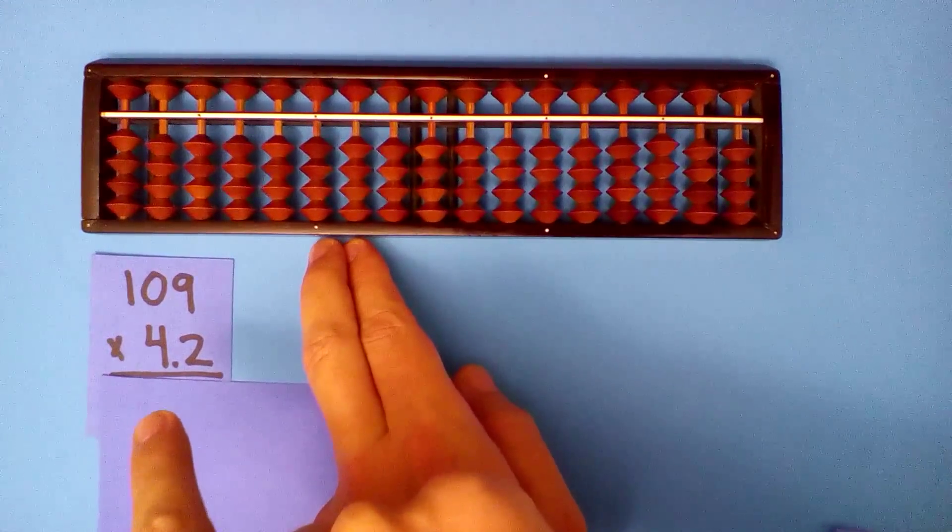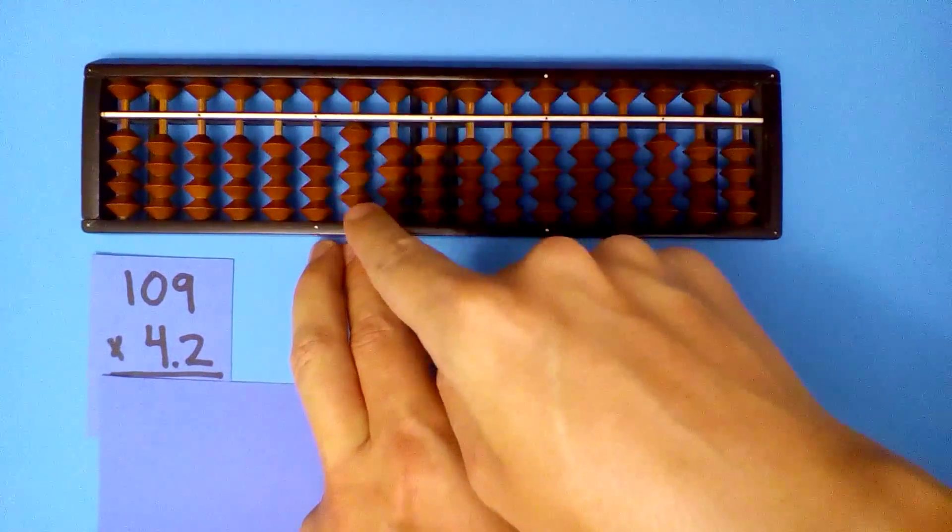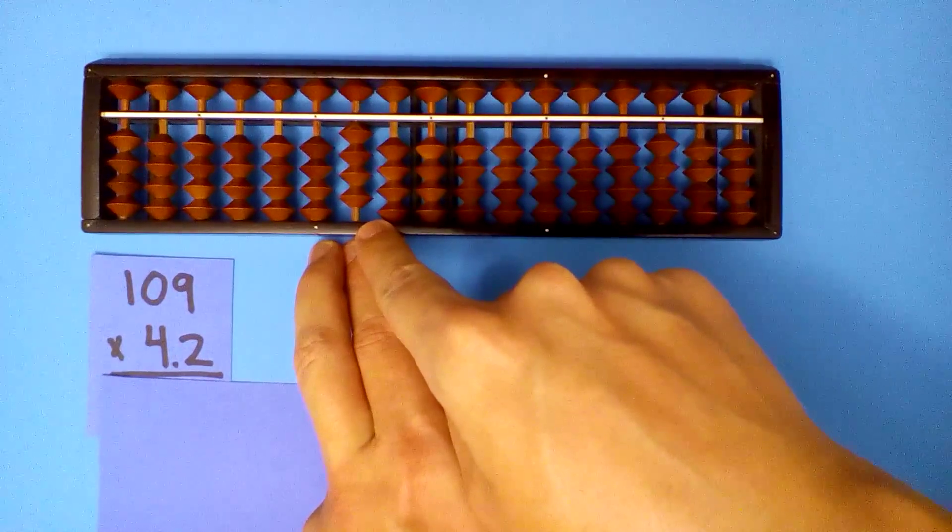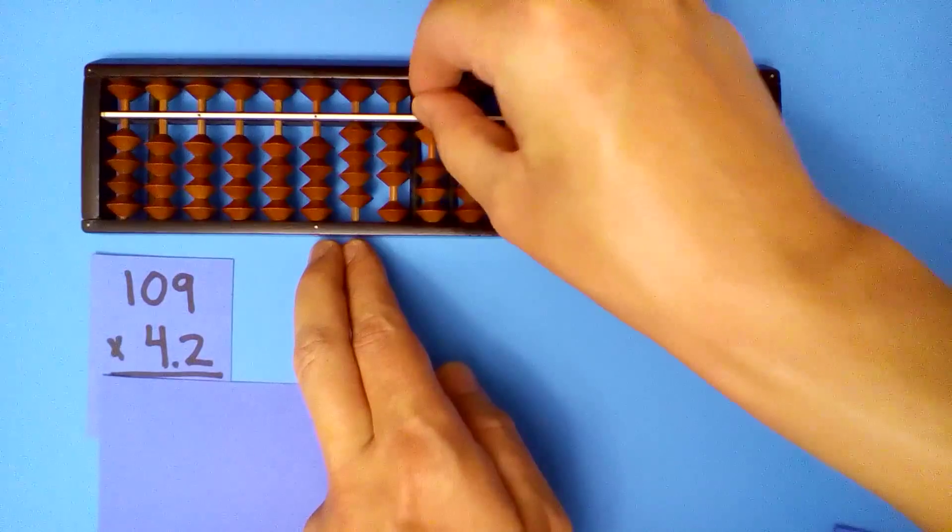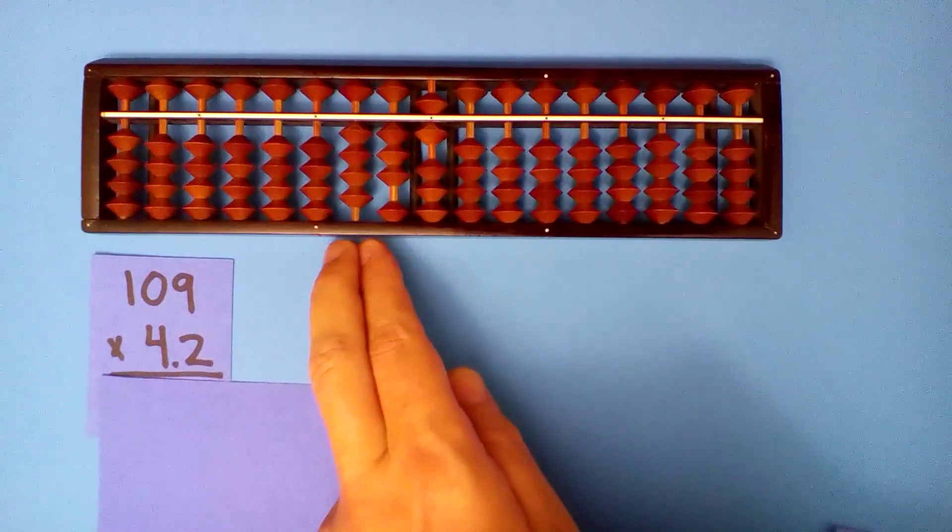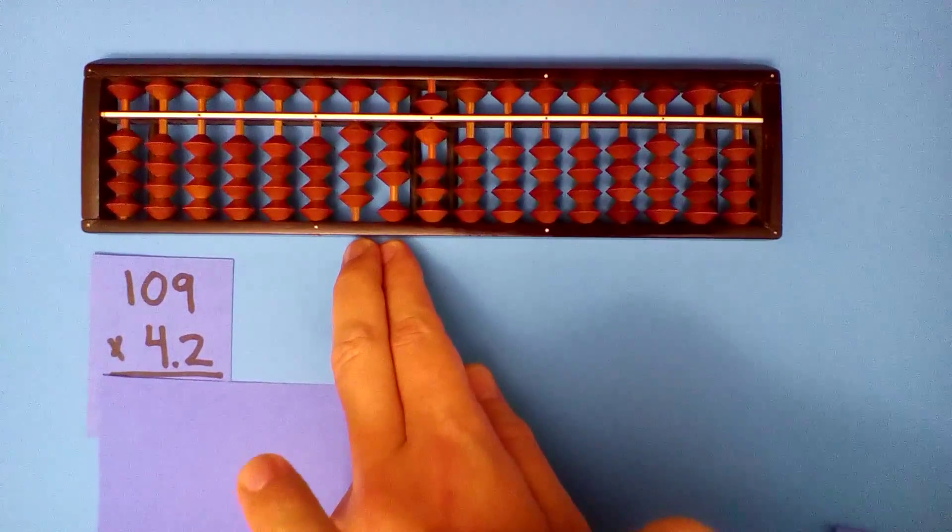Use the four first. Four times one, four. Four times zero, zero. Four times nine, thirty-six.